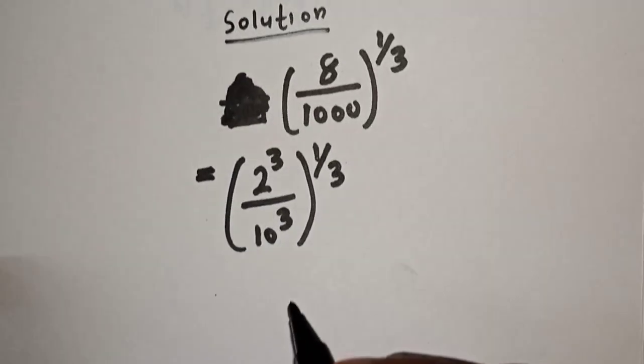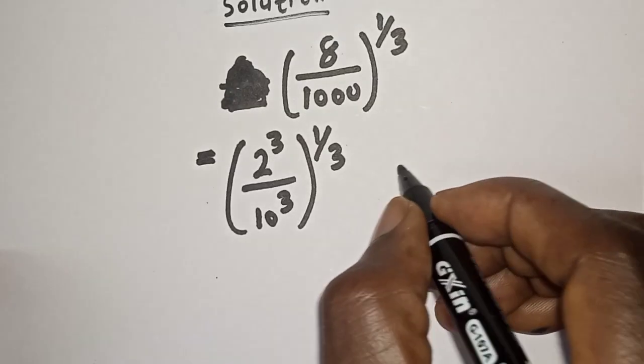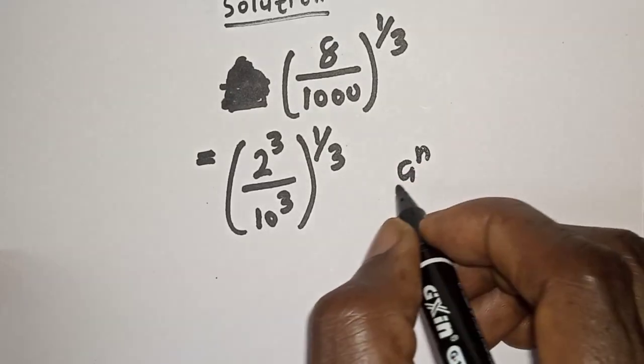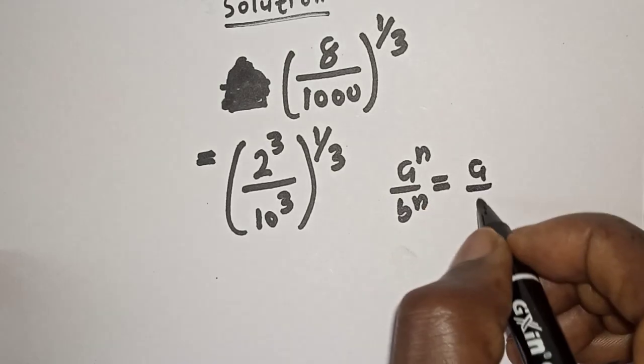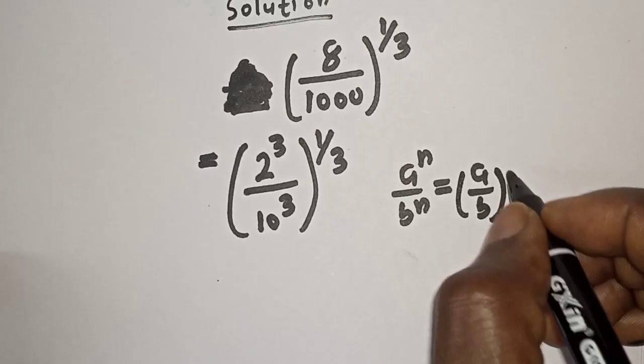Take note of this rule: if you have a raised to power n over b raised to power n, this is equal to a over b to the power of n.